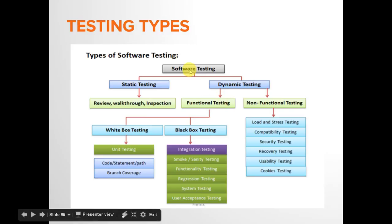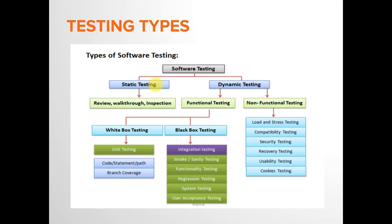Software testing has two main parts: static testing and dynamic testing. Static testing means testing an application without executing the code — so what you can test are the documents and designs created as part of the development. Review, walkthrough, and inspection are the methods implemented while performing static testing for any product.